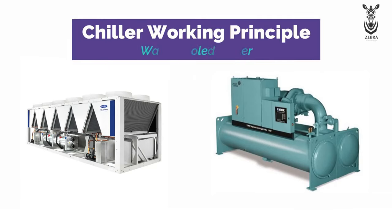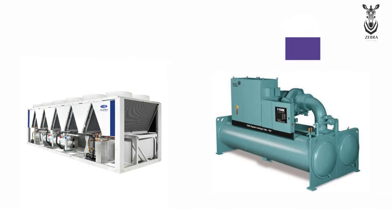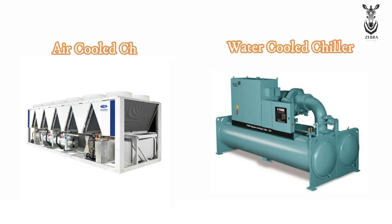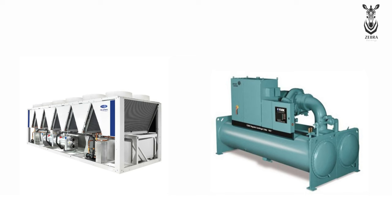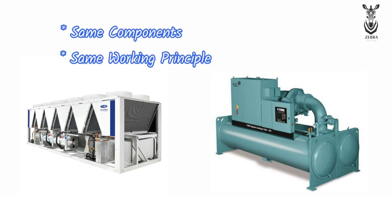In this video, we are going to discuss about the working principle of the chiller. We can see chillers in large buildings. There are many types of chillers, but commonly there are two types: one is air-cooled chiller and another one is water-cooled chiller. Although there are many types of chillers, they all have the same components and same working principle.